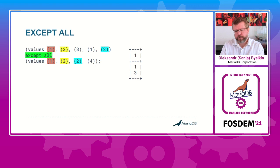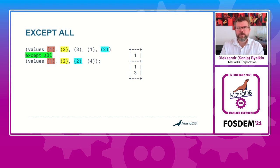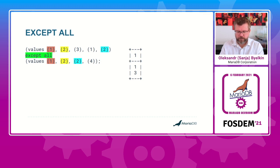With EXCEPT ALL, it can be represented the same way, but we just remove the matched records from the first result set. The second 1 has no pair in the second result set, so those records remain as the result.